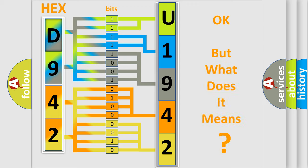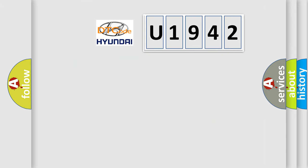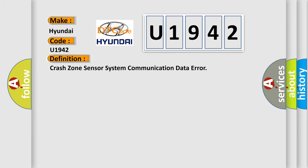The number itself does not make sense to us if we cannot assign information about what it actually expresses. So, what does the Diagnostic Trouble Code U1942 interpret specifically for Hyundai car manufacturers? The basic definition is: Crash Zone Sensor System Communication Data Error.